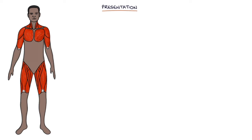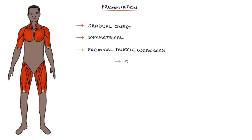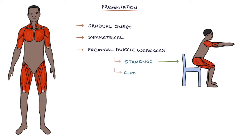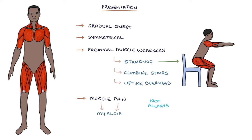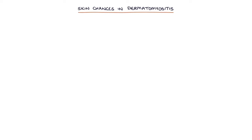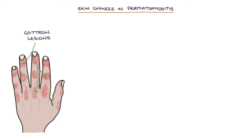The typical presenting symptom is a gradual onset, symmetrical, proximal muscle weakness, which causes difficulties in standing from a chair, climbing stairs, or lifting items overhead. There may be muscle pain or myalgia, but this is not always the case. Polymyositis occurs without any skin changes. Potential skin changes in dermatomyositis include Gottron lesions, which are scaly erythematous patches over the knuckles, elbows and knees.